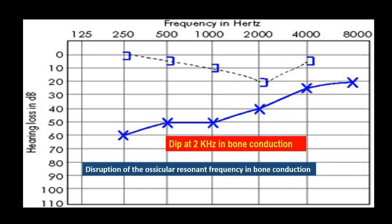Carhart's Notch is defined as a dip in bone conduction at 2 kilohertz. Ideally this starts with 500 hertz at 5 decibel, 1000 hertz at 10 decibel, 2000 hertz at 15 decibel, and again returns to 5 decibel at 4 kilohertz.